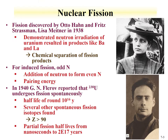Nuclear fission was discovered by Otto Hahn, Fritz Strassmann, and Lise Meitner back in 1938. They demonstrated that neutron irradiation of uranium resulted in lower elements such as barium and lanthanum, confirmed by chemical separation. They were able to induce fission in uranium due to its odd number of neutrons. When uranium-235 absorbed a neutron, that neutron paired with the unpaired neutron in the nucleus, providing additional pairing energy that induced fission. So heavy odd-N isotopes can undergo fission.